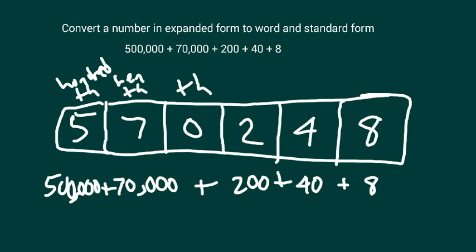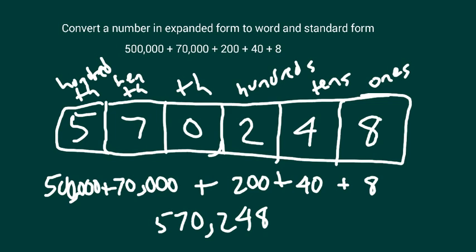What I wrote into the chart does match the expanded form that I was given. The number that I have based upon the chart is 570,248. I've written it in standard form here. And I just stated what the word form would be: five hundred seventy thousand two hundred forty-eight.